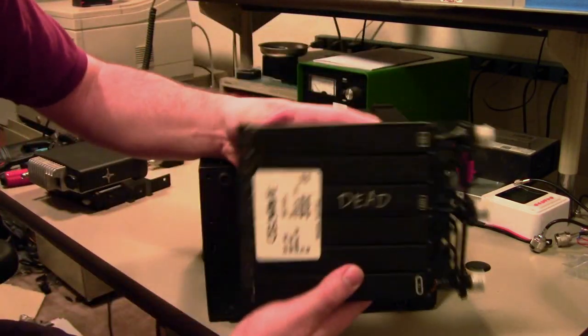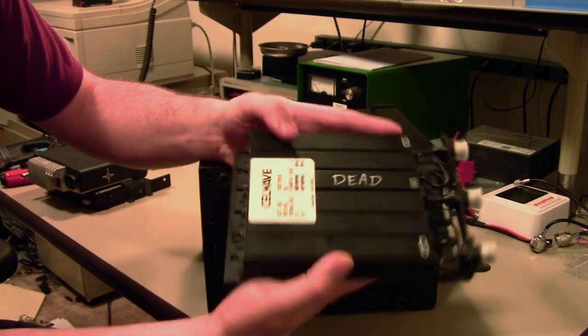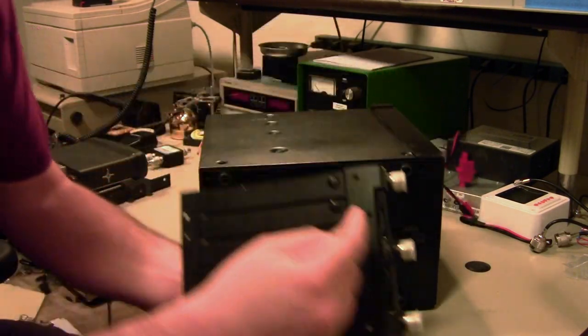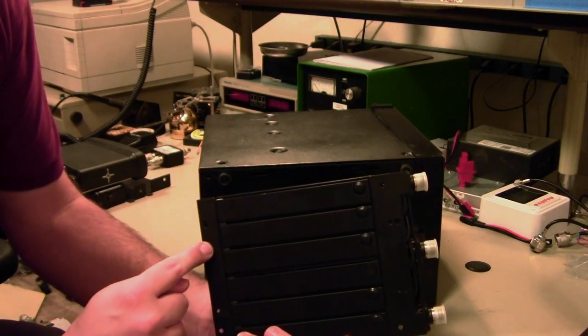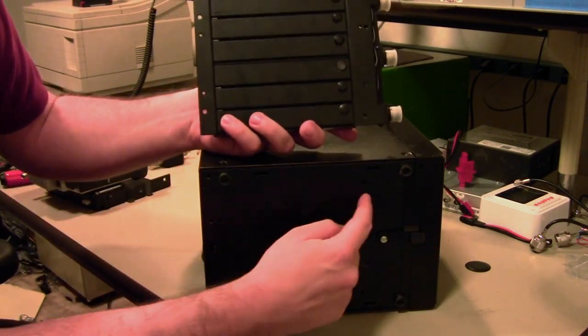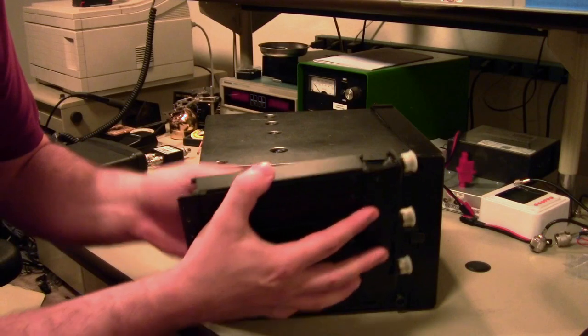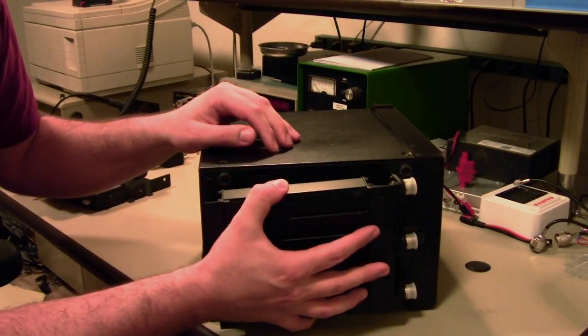So for example, here's a standard CellWave flat pack UHF repeater duplexer, which has threaded holes here and here. And so those happen to line up with some of these. And so the duplexer mounts just like so.